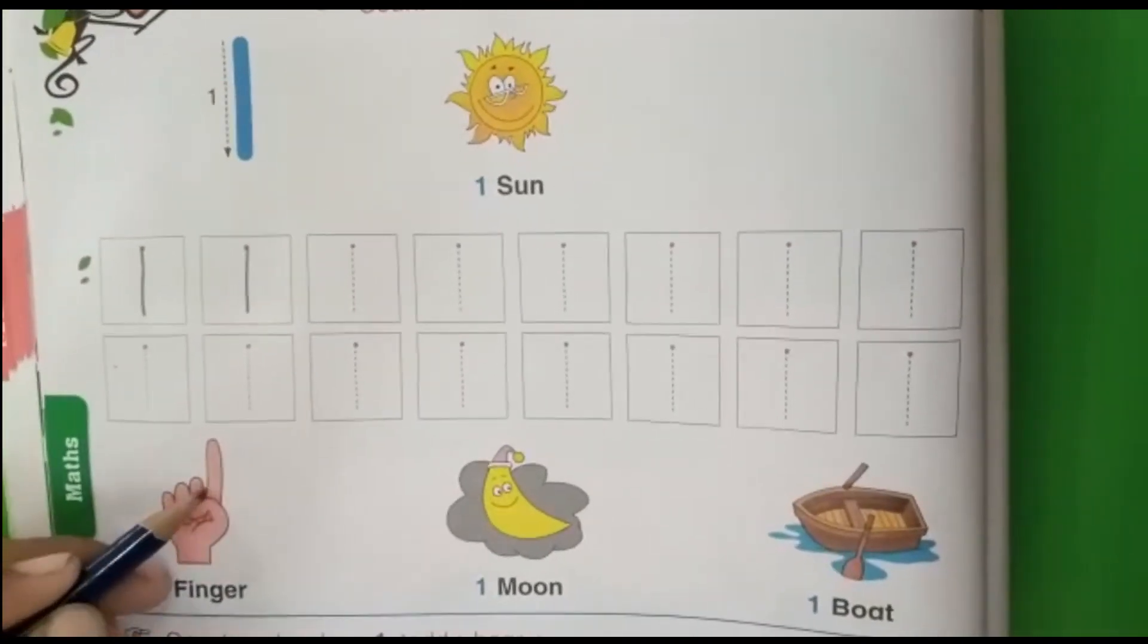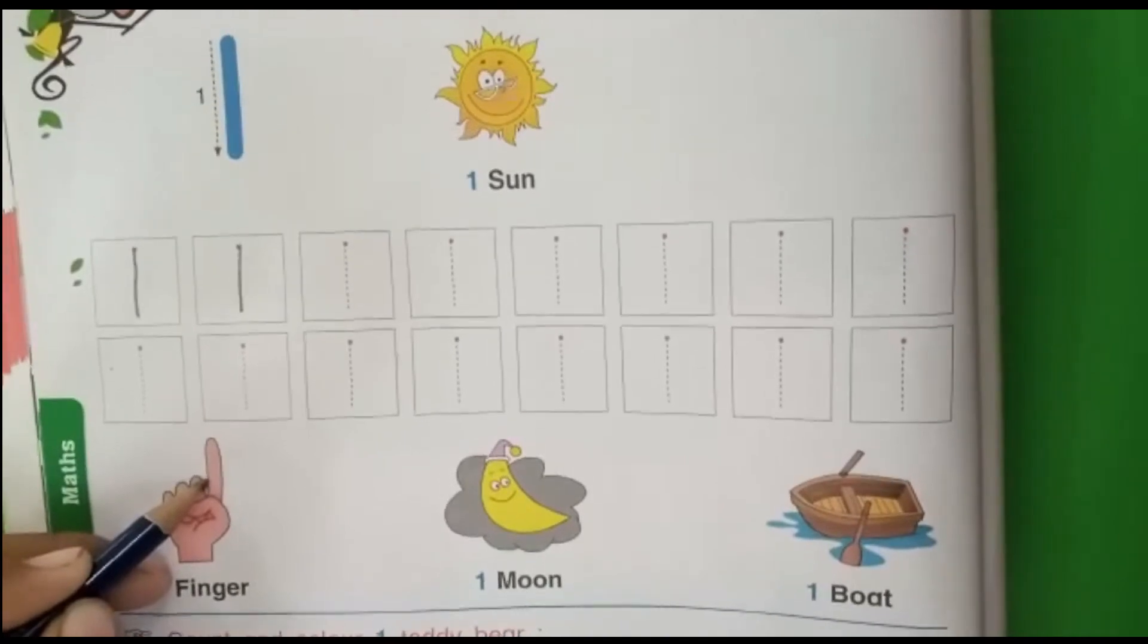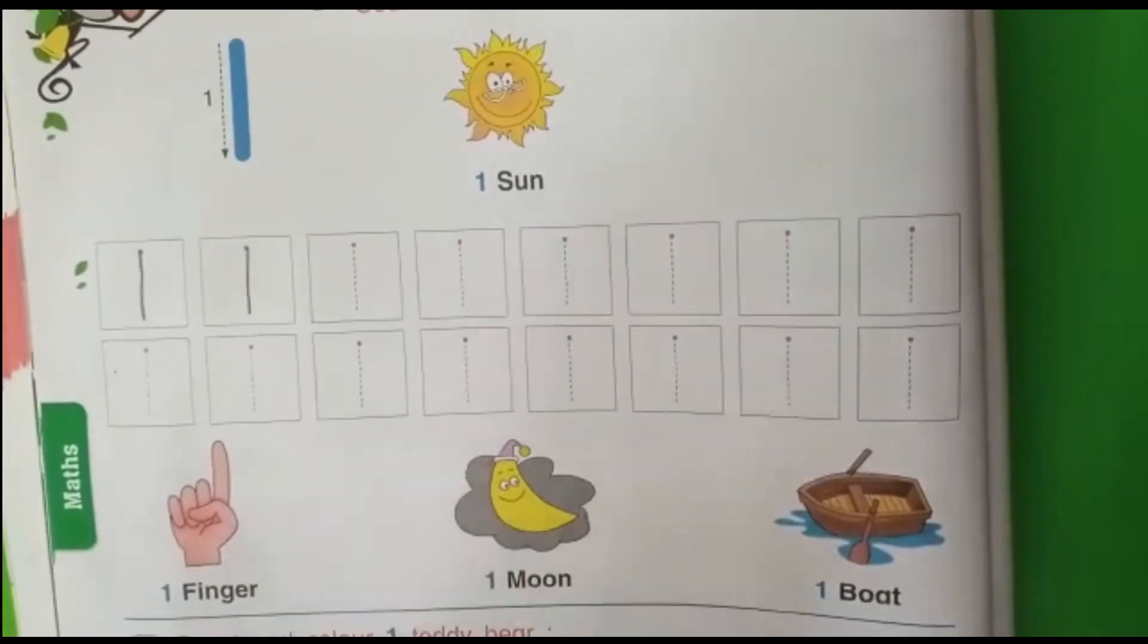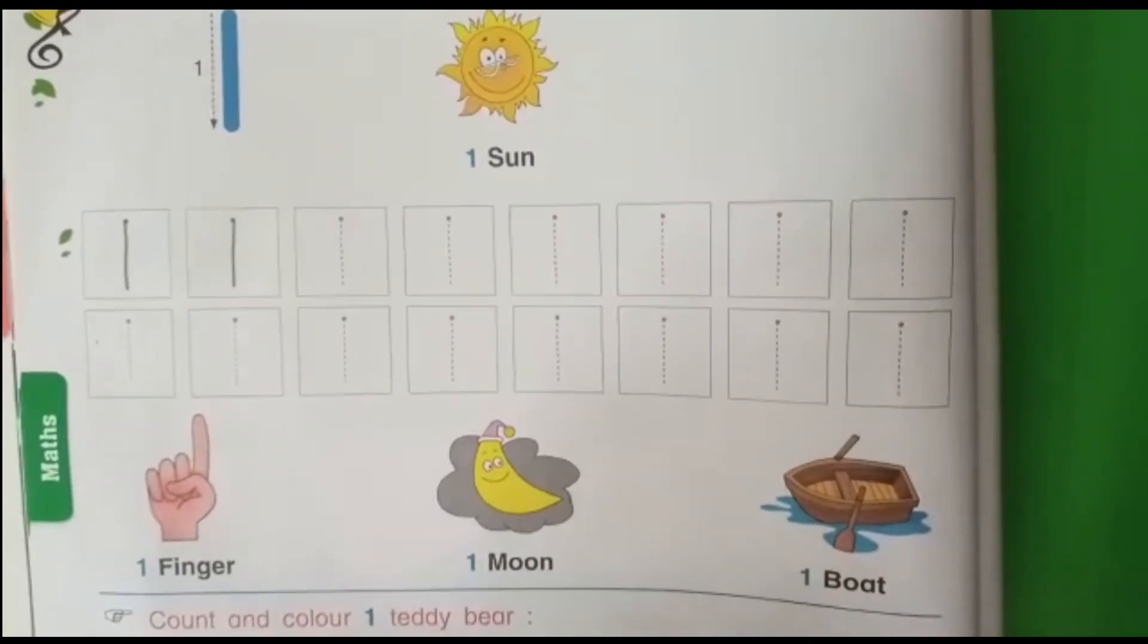Now see here. How many finger? 1 finger. How many moon? 1 moon. And how many boat? 1 boat.